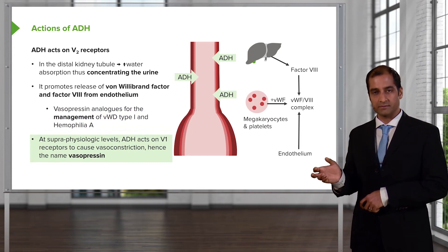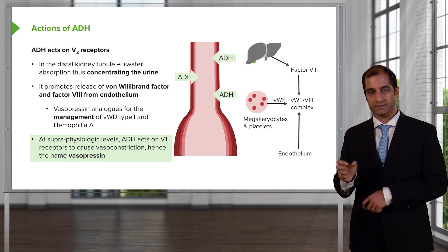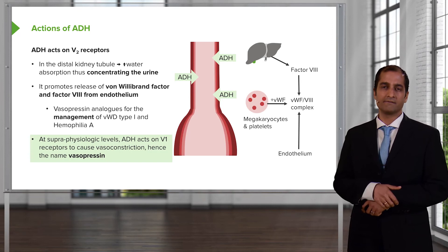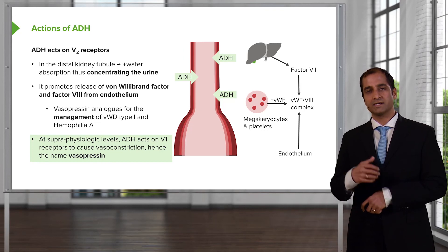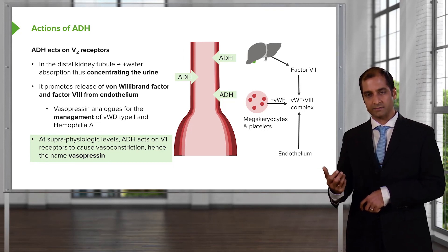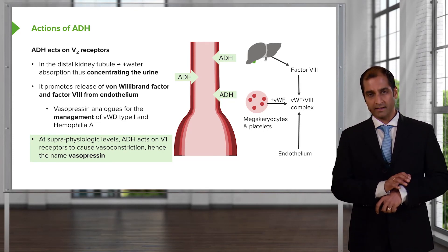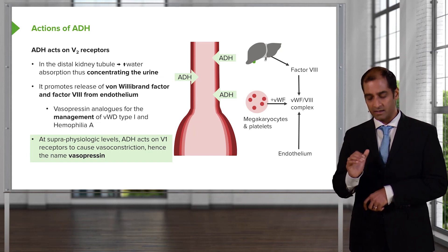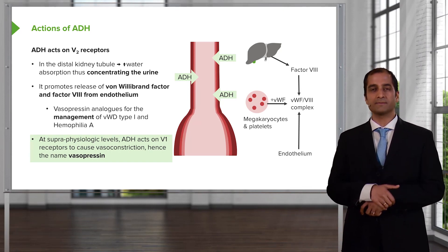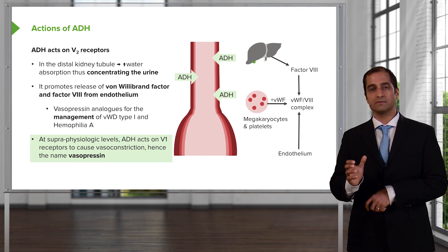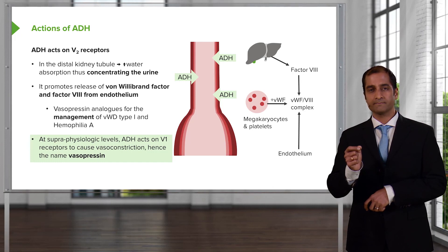At supraphysiologic levels of ADH, it works on V1 receptors to cause vasoconstriction. You need really high levels of ADH — a patient who is quite severely dehydrated — for the influence of ADH on blood vessels to take place. At low levels of ADH, as soon as plasma osmolarity rises above 300, ADH will be released from the posterior pituitary. To keep things in perspective: ADH is synthesized in the hypothalamus.